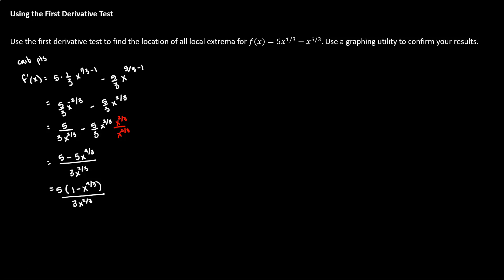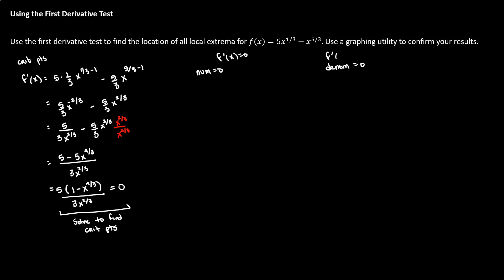Now that we have our first derivative completely factored we set it equal to zero and solve for critical points. This equation is solved by setting the numerator equal to zero and the denominator equal to zero separately. When the numerator equals zero the first derivative equals zero; when the denominator equals zero the first derivative is undefined or does not exist. Both cases give us critical points.